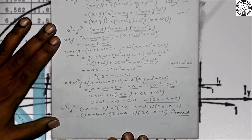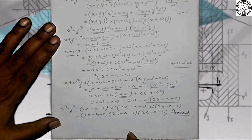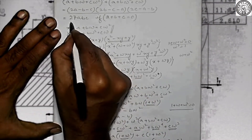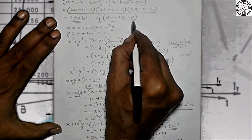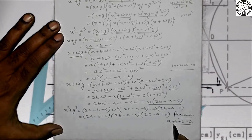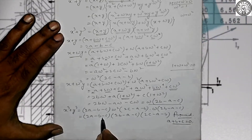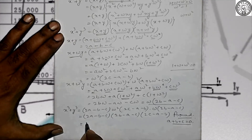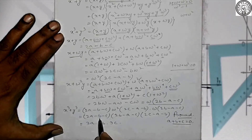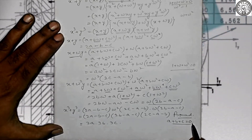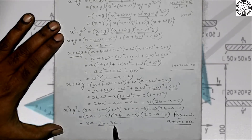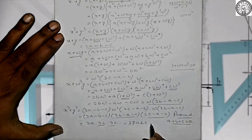For the second part: prove this equals 27abc when a + b + c = 0. Since a + b + c = 0, we have -b - c = a, so 2a - b - c = 2a + a = 3a. Similarly 2b - c - a = 3b and 2c - a - b = 3c. Therefore the product is 3a × 3b × 3c = 27abc. Proved.